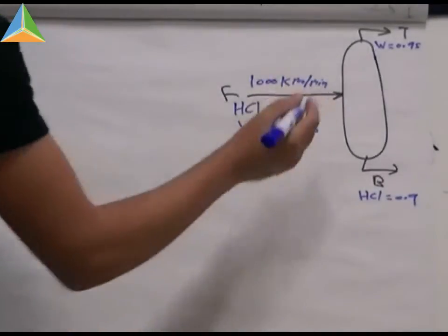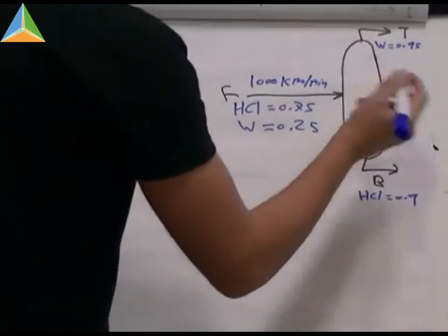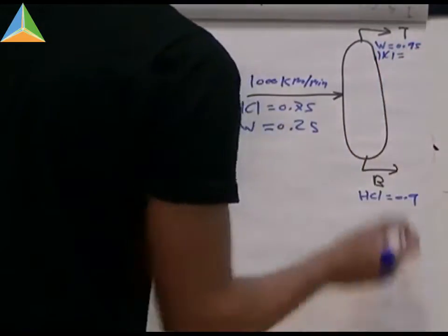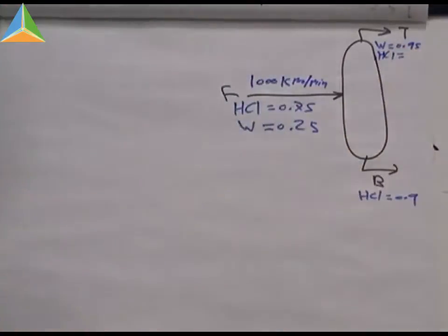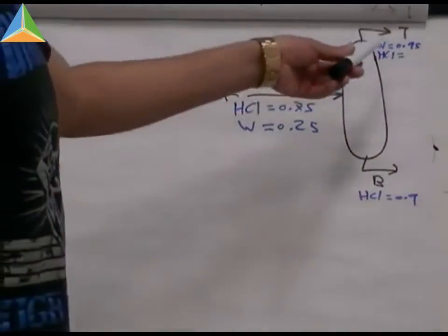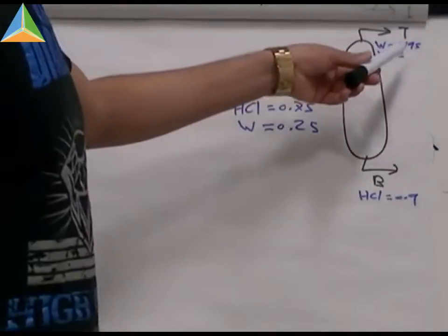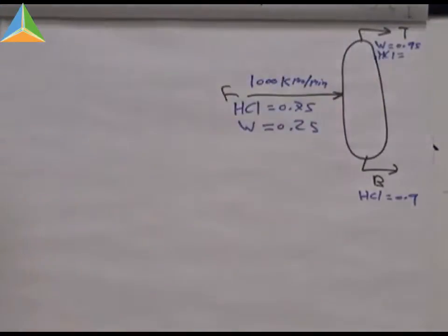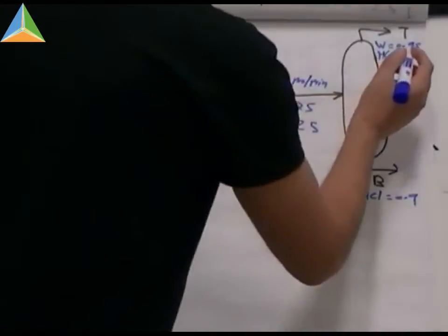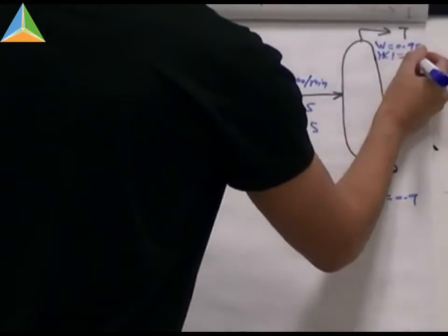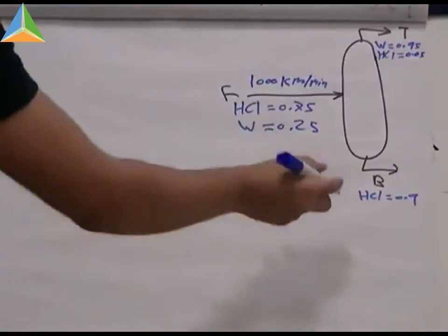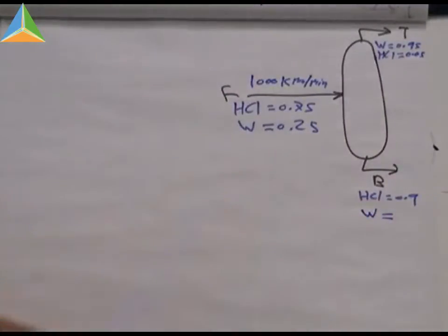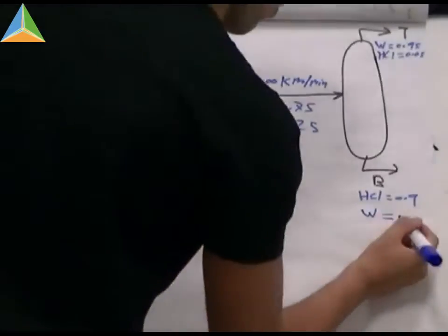So on the top stream, what about the HCl fraction? It's really easy, this type. Just subtract that number from 1 and we'll get the answer. So 1 minus 0.95 is going to be 0.05. And here the same, 1 minus 0.9, that's going to be 0.1.